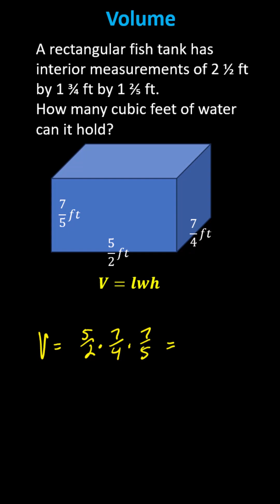Before we multiply, notice we do have a common factor of five between the numerator and denominator. Five divided by five simplifies to one. There are no other common factors other than one between the numerators and denominators. So now we can multiply knowing the fraction will be in simplified form.